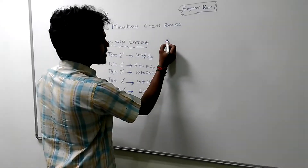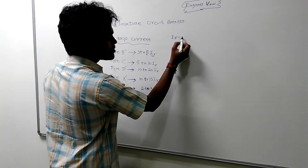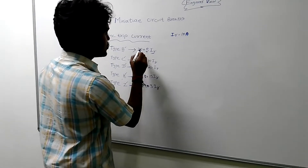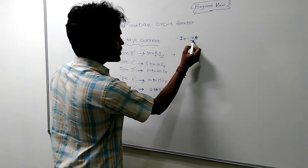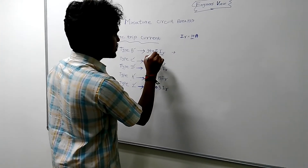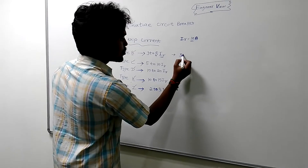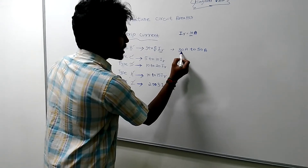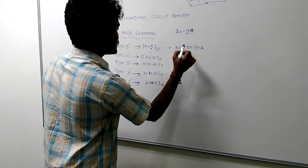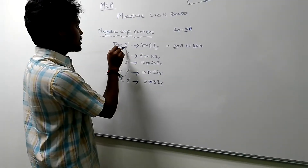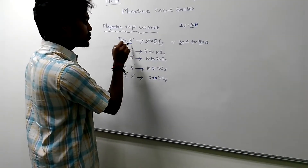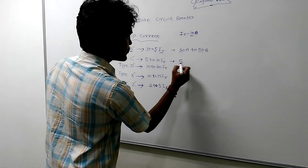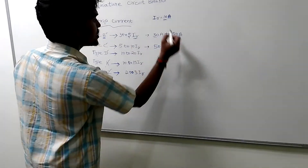For example, if the rated current is 10 amps, for Type B — which is 3 to 5 times the rated current — the trip range will be 30 amps to 50 amps. So the range is from 30 amps up to 50 amps.